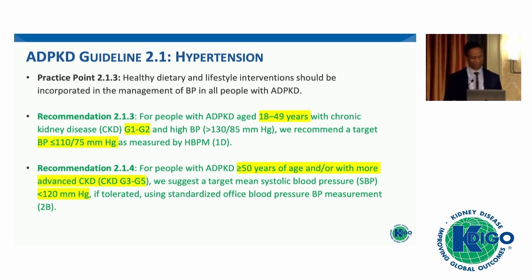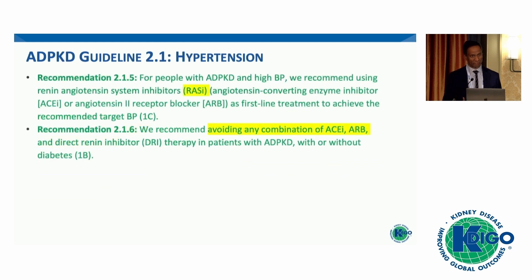For ages between 18 to 49 in stages 1 to 2 chronic kidney disease, KDIGO recommends reducing blood pressure to less than 110/75. For patients over the age of 50 or more advanced stages of chronic kidney disease, KDIGO recommends a higher blood pressure target but below 120 systolic. For pharmacological treatment, renin-angiotensin inhibitors are recommended as first-line — either ACE inhibitors or angiotensin receptor blockers — and avoiding the combination of the two is recommended.